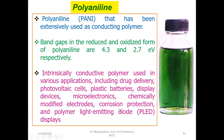Polyaniline is also used in biosensors, corrosion protection, LEDs, polymer light emitting diodes, displays, etc. Let us look at how this polyaniline is synthesized in the laboratory.